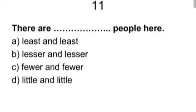Question number eleven. There are blank people here. Least and least, lesser and lesser, fewer and fewer, little and little. And the answer is, fewer and fewer people here. Since it is countable, so it should be few.